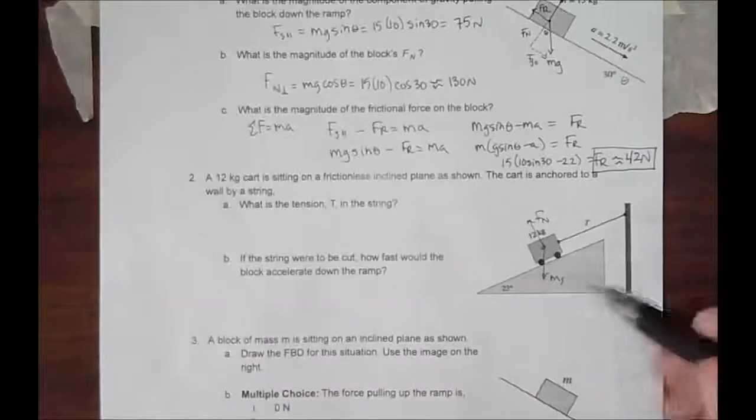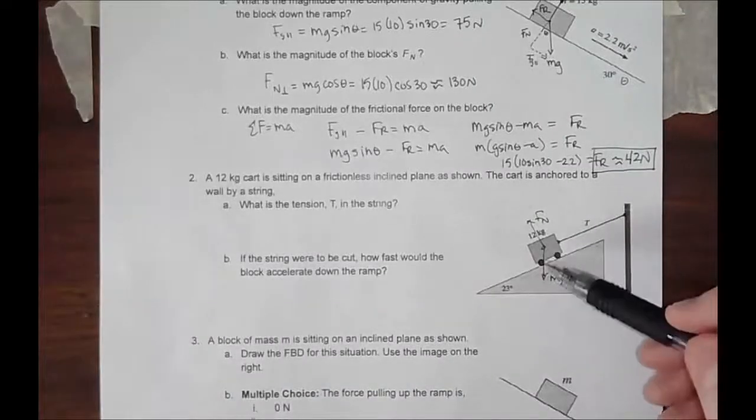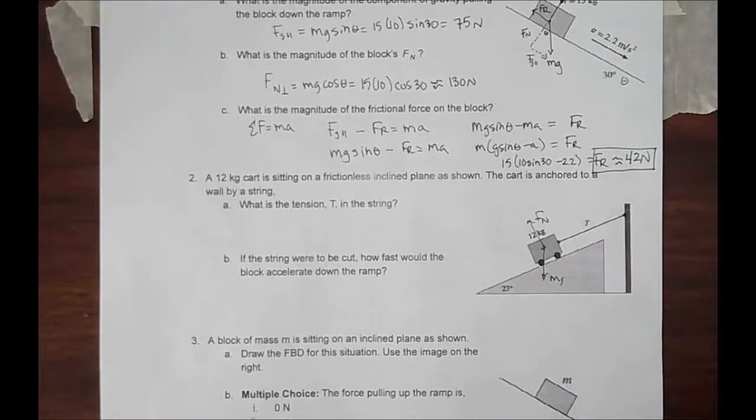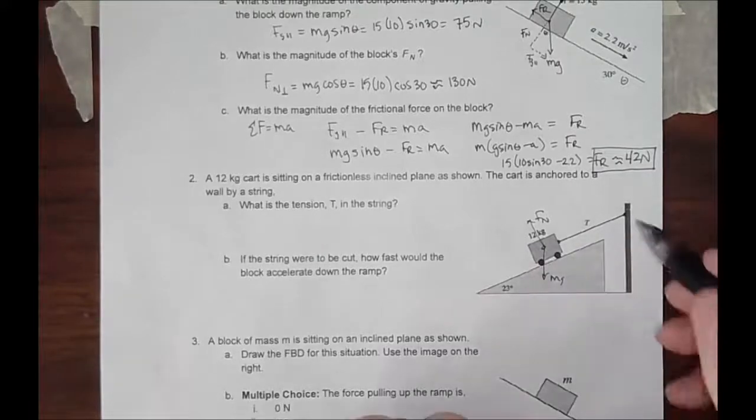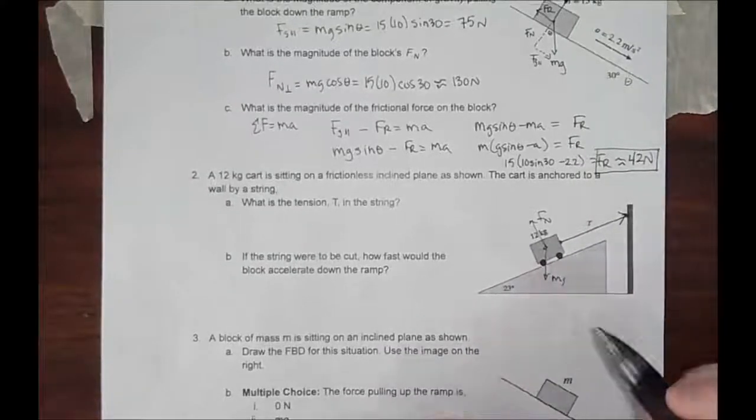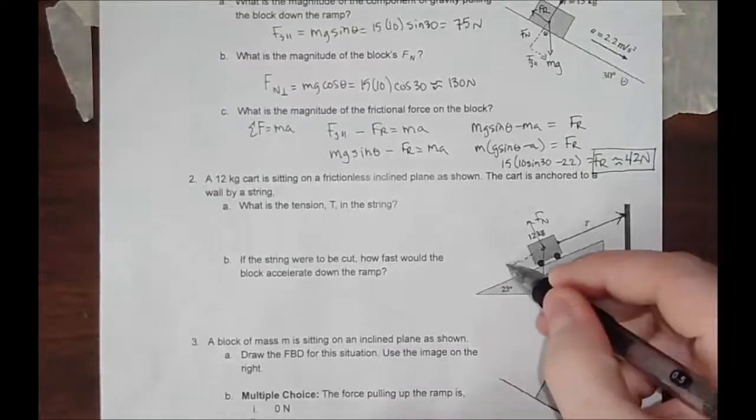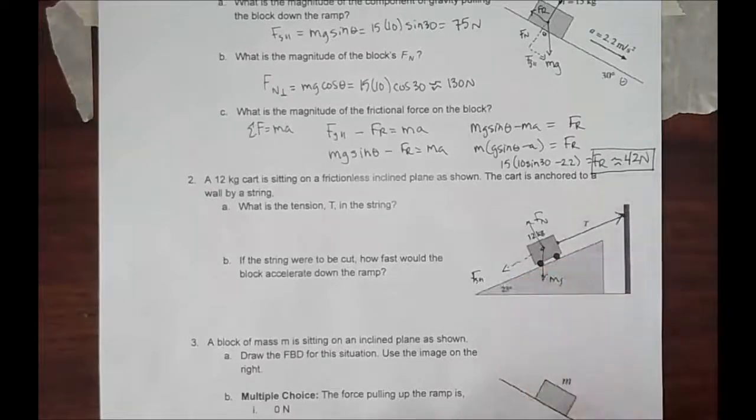We have this mg pulling down and your normal force perpendicular to the ramp. The question is, what is this tension? The tension pulling up will have to be equal and opposite to the component of gravity pulling down the ramp. That's Newton's third law of motion.